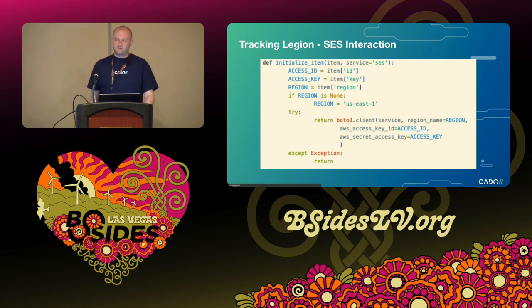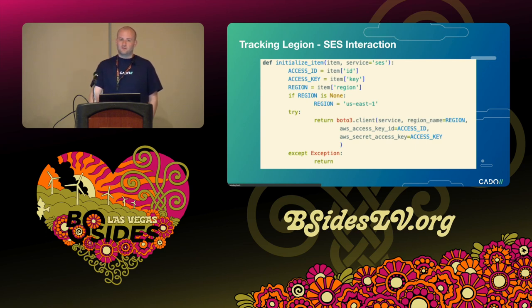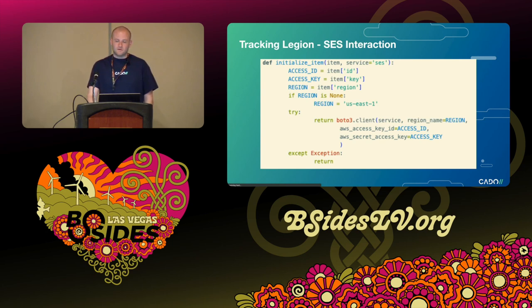Since Legion is concerned primarily with SMTP abuse, the tool's next steps are to set up and interact with SES. A function demonstrates the approach to set up an SES client via the AWS SDK for Python — Boto3. This function also performs configuration like setting the default AWS region and defining credentials. Given the malicious IAM user operates under Administrator Access permissions, there are no barriers when accessing SES, and Legion's operator can now send emails and query account information.